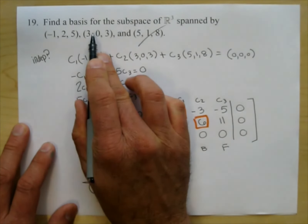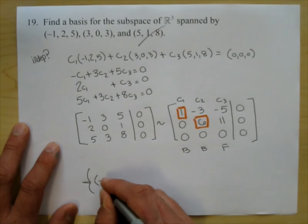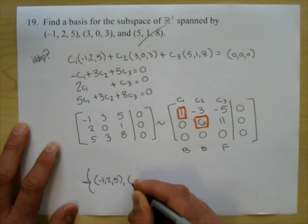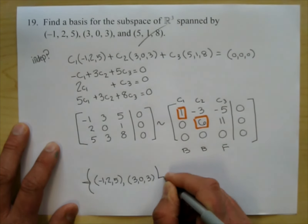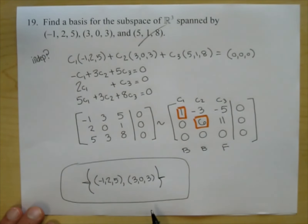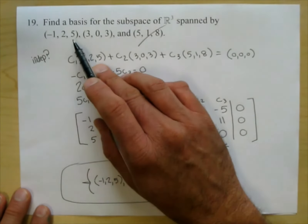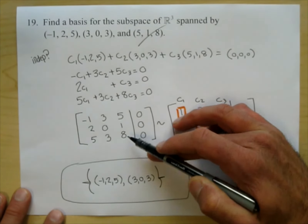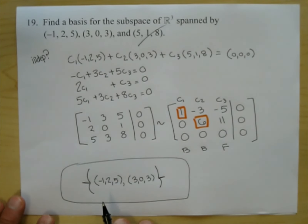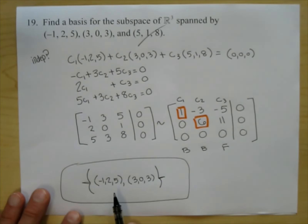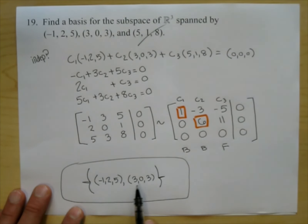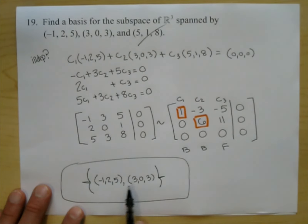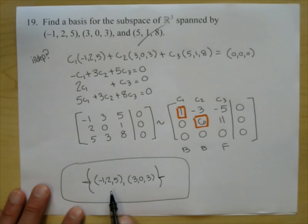The basis for the subspace spanned by those three vectors is the two non-dead-weight vectors: negative 1, 2, 5 and 3, 0, 3. Note you can also scale 3, 0, 3 to 1, 0, 1 — it would be a different basis but span the same subspace.